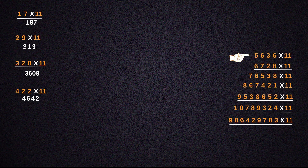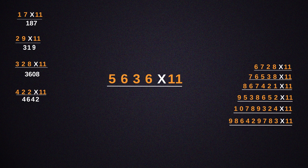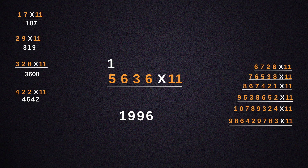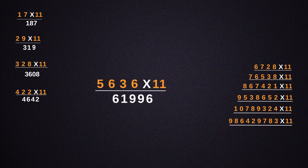Again, let's try this one. 5,636 into 11. First, write 6 as it is. Now add 3 and 6, which gives us 9. Again, add 6 and 3, which is 9. Then add 5 and 6 — that is 11. So put 1 down, and the other 1 gets added to 5, making it 6. So the answer we get is 61,996.